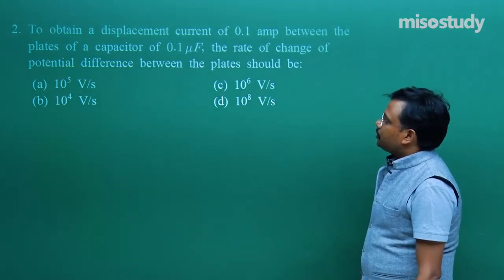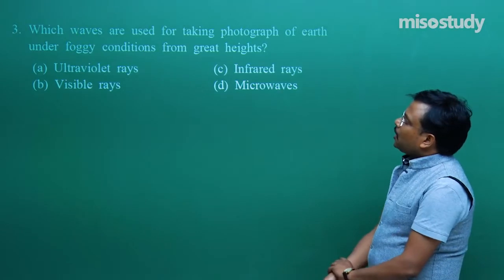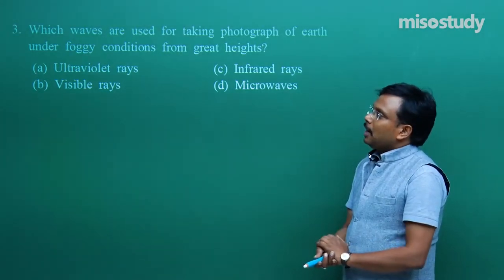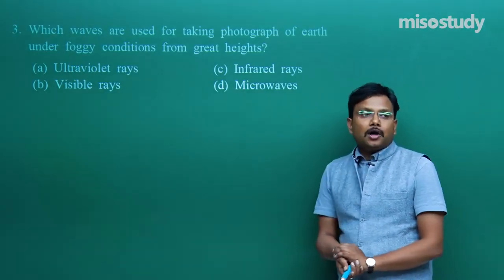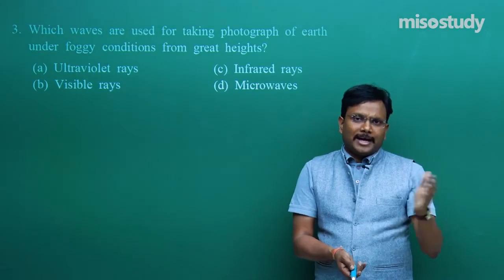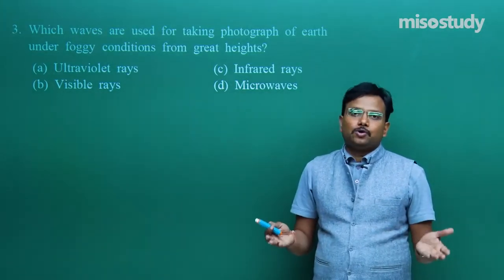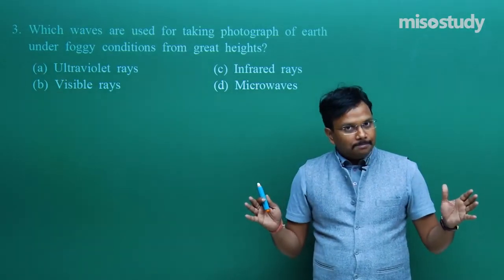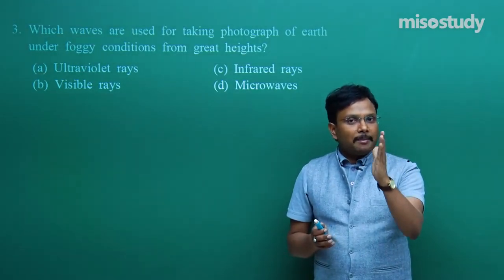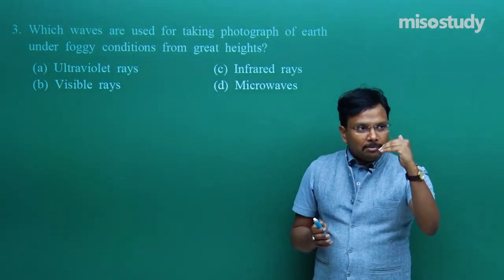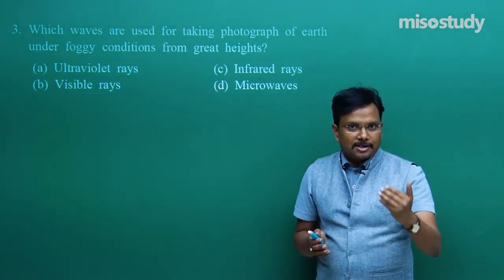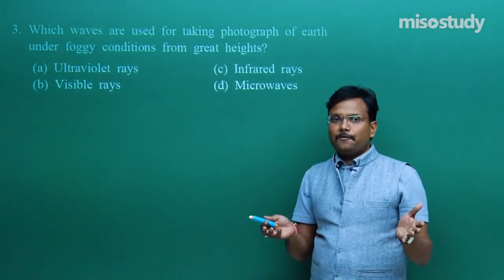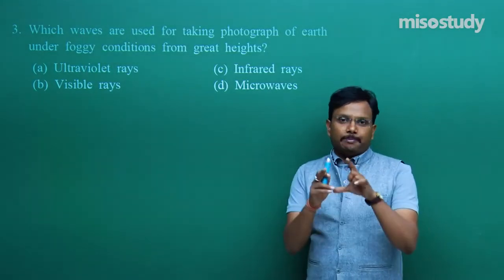Let us move on to question number 3: which waves are used for taking photographs of Earth under foggy conditions from great heights? I placed this question to focus on the electromagnetic wave spectrum diagram — found in your textbook and supporting books — starting from cosmic rays, gamma rays, X-rays, and so on, covering frequency, energy, and utilization. My suggestion is to review that diagram regularly.